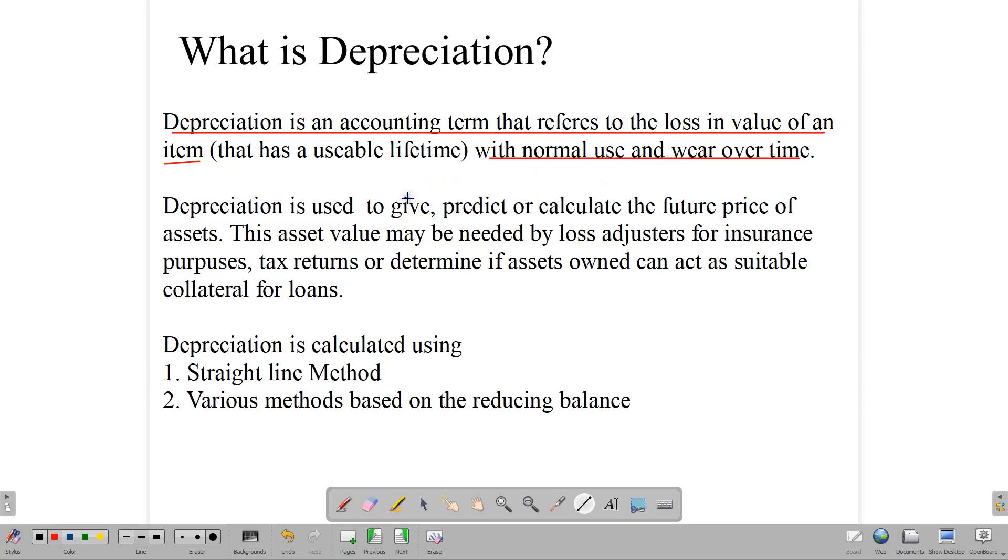Now, some products, like electronics and machinery, have what we call a usable lifetime. That is, it is not meant to last forever. It will break down at some point and will not be able to function. And so, depreciation is that term that refers to the loss in value of those items that have a usable lifetime with normal use.